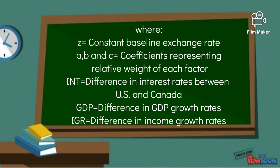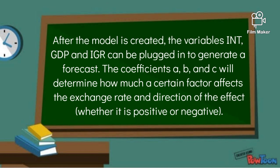Where Z is the constant baseline exchange rate, A, B, and C are the coefficients representing the relative weight of each factor, INT is the difference in interest rates between US and Canada, GDP is the difference in GDP growth rates, and IGR is the difference in income growth rates. After the model is created, the variables INT, GDP, and IGR can be plugged into a general rate forecast.